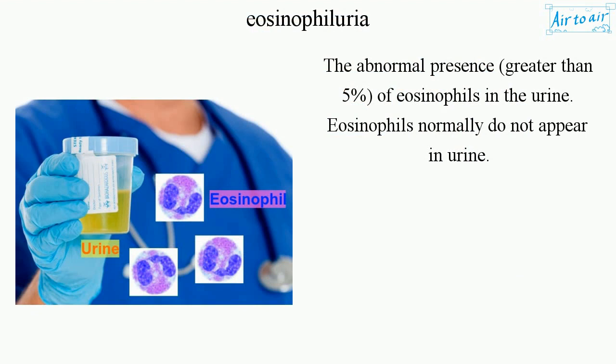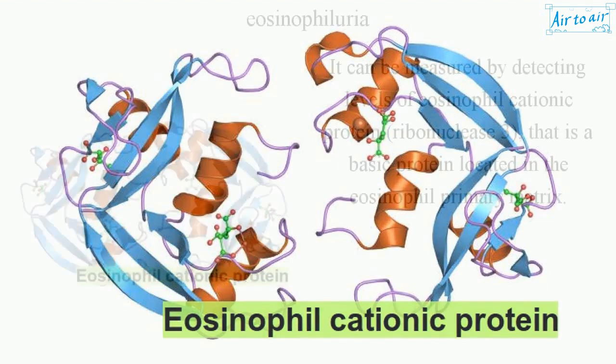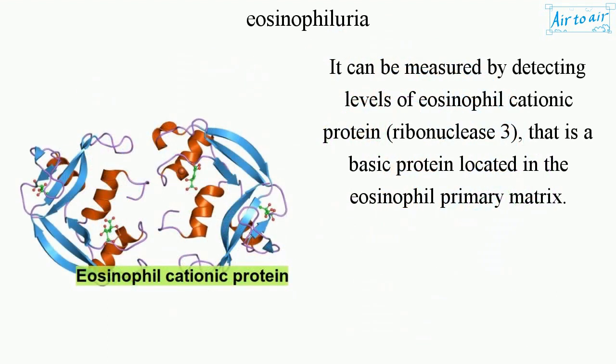Eosinophils normally do not appear in urine. It can be measured by detecting levels of eosinophil cationic protein, ribonuclease 3, a basic protein located in the eosinophil primary matrix.